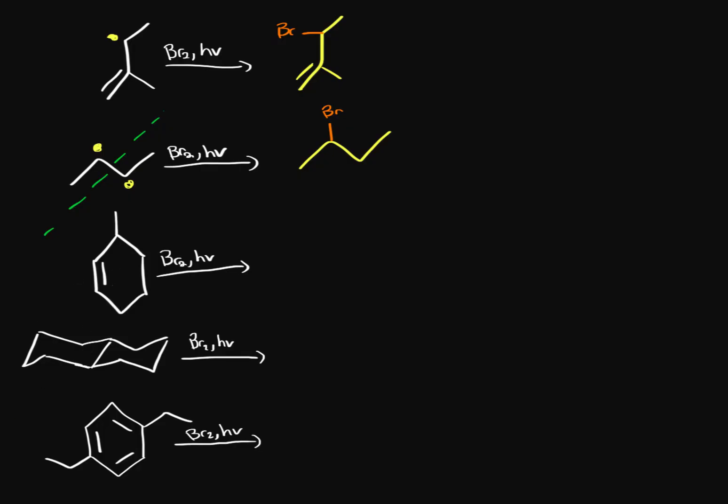Then on this third molecule over here, the most stable position is this tertiary allylic position. Any other position is less stable—for example, this secondary allylic is less stable. So our main product is going to look the same except we have bromine coming off of that tertiary allylic position.